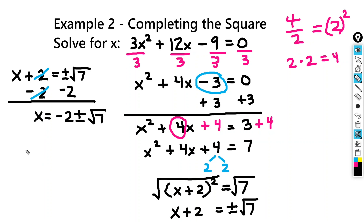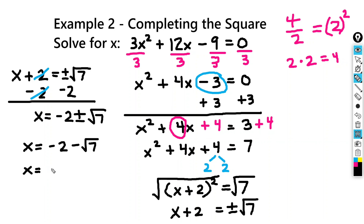So our two solutions here are x equals negative 2 minus the square root of 7, and x equals negative 2 plus the square root of 7. And that's our two solutions for example 2.